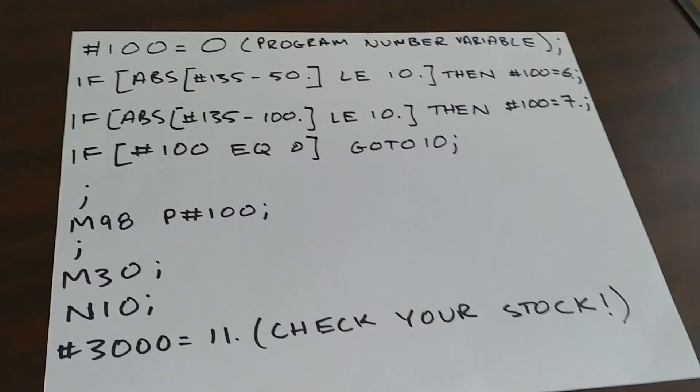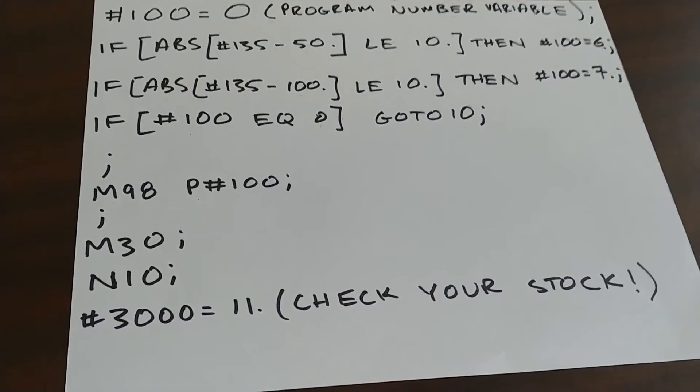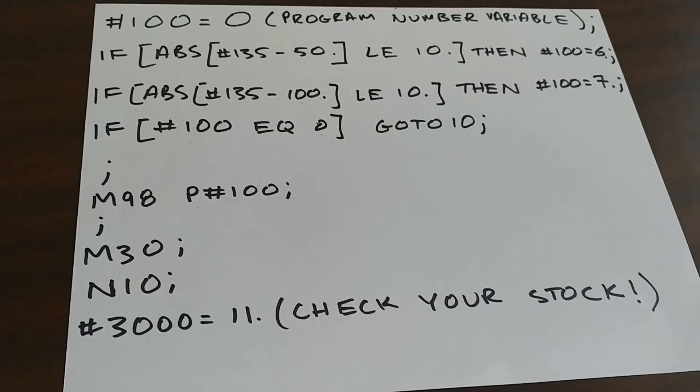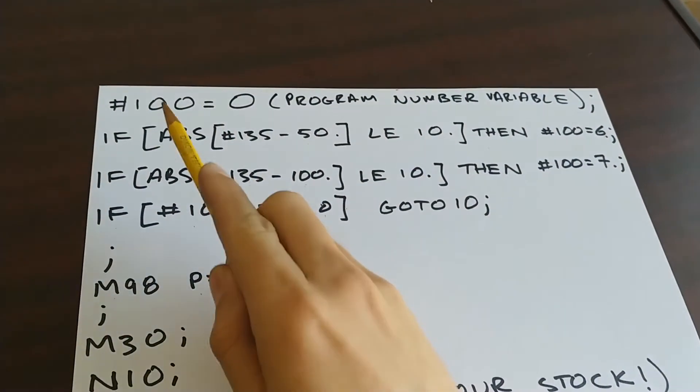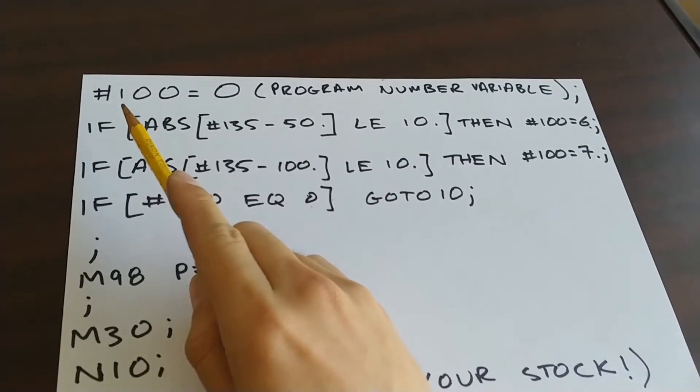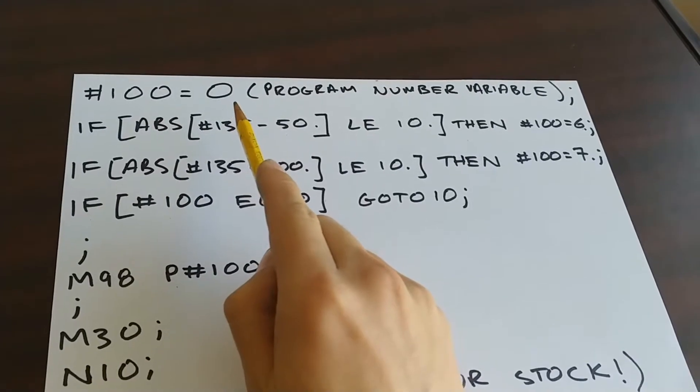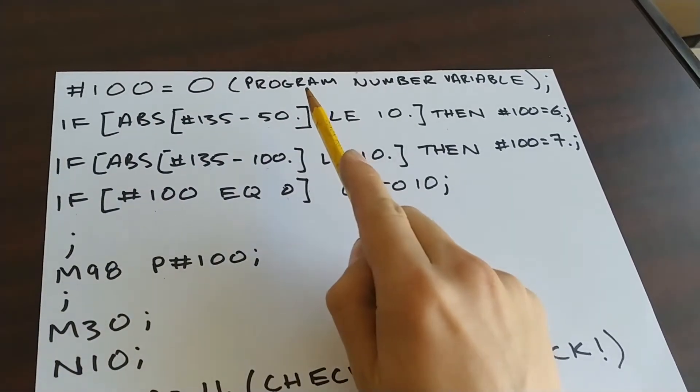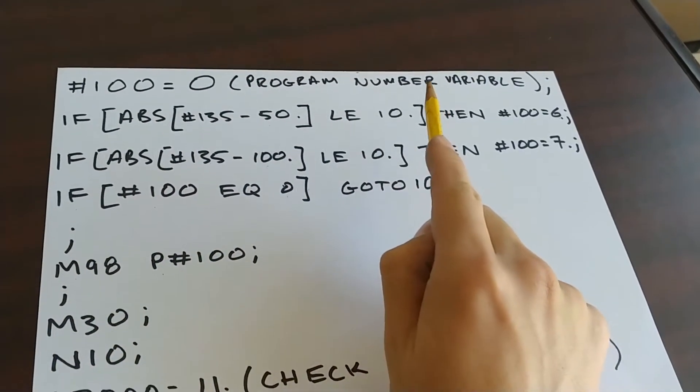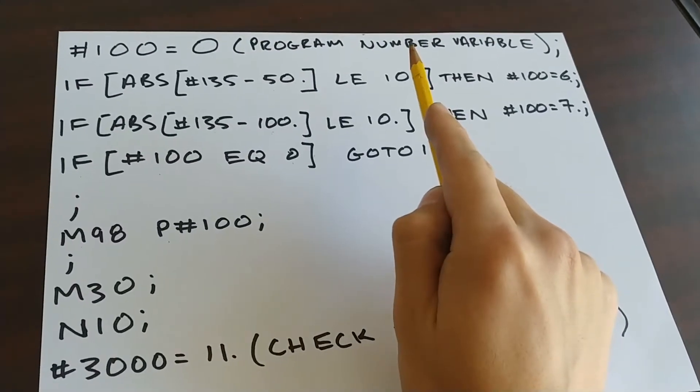Now I'll go over the code that I use to run different programs depending on what the stock size was. So at the beginning here, I'm going to set pound 100 equal to zero. Now I'm going to use the variable pound 100 as my program number variable, some place to store the program number I want to run.